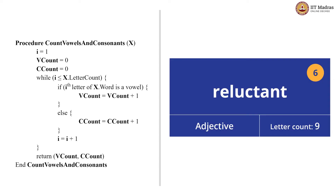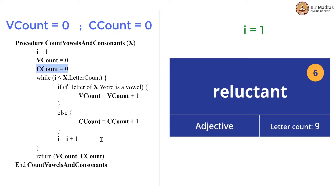Let us take an example. Here we have a card with the word 'reluctant', and this card is passed as the parameter x. In the procedure, we are initializing a variable i equal to 1, v_count is 0, and c_count is 0. Clearly, v_count stands for vowel count and c_count stands for consonant count. We have a while loop with the condition that i is less than or equal to x dot letter count.